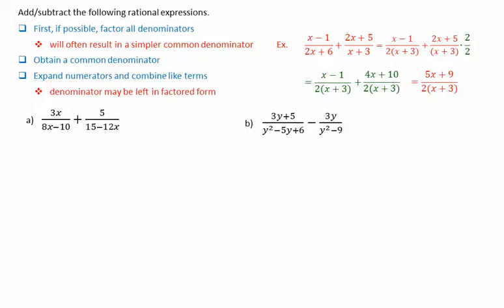For the first example, the denominator 8x minus 10 has a common factor of 2, giving us 2 times 4x minus 5. For the second rational expression, if we factor out a negative 3, note that the plus becomes a minus, and we can rewrite the denominator as 3 times 4x minus 5. We've got 4x minus 5 common to both denominators, so the common denominator will be 6 times 4x minus 5.